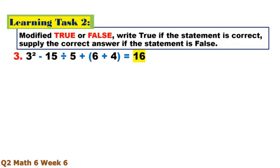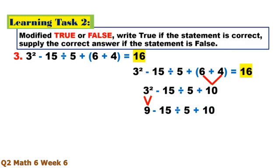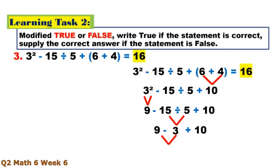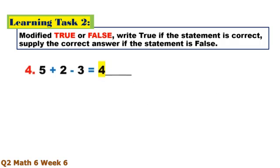Number 3. Parenthesis: 6 plus 4 equals 10. Then exponent: 3 times 3 equals 9. Then division: 15 divided by 5 equals 3. From left to right: 9 minus 3 equals 6, plus 10 equals 16. This is true.